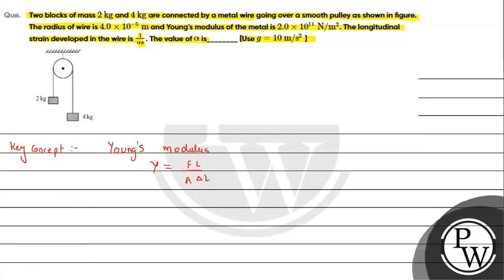First, we find the tension in the string. To calculate tension, we need acceleration first. The 4 kg block goes down and the 2 kg block goes up with the same acceleration, since the string constrains them. Acceleration a = net driving force / total mass. The net driving force is 4g − 2g = 20 N, and total mass is 2 + 4 = 6 kg. So a = 20/6 = 10/3 m/s².